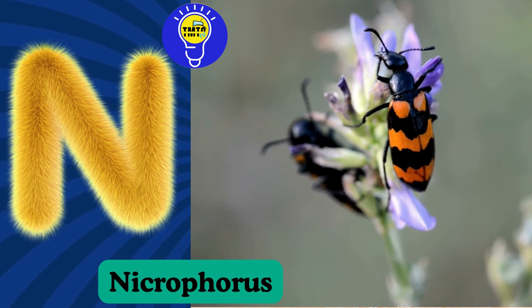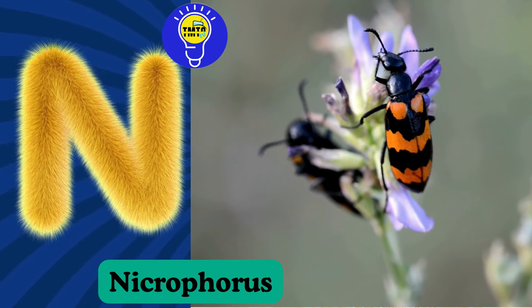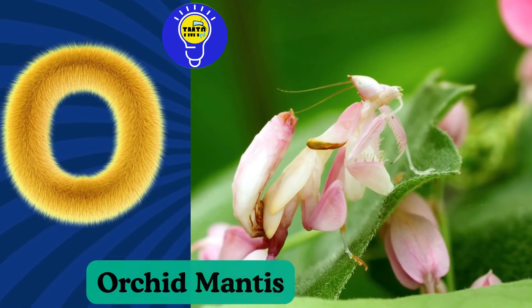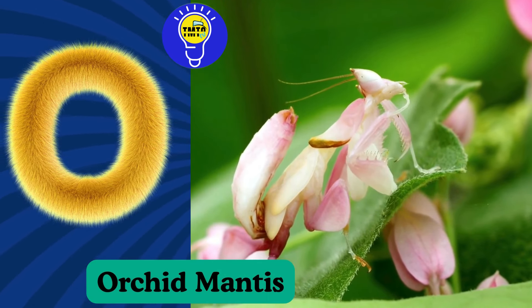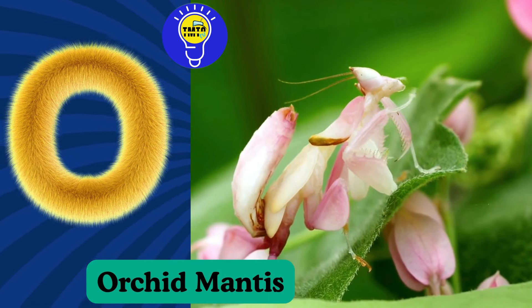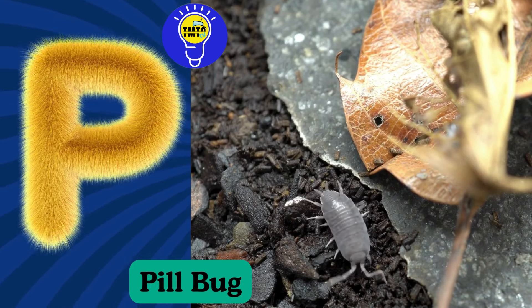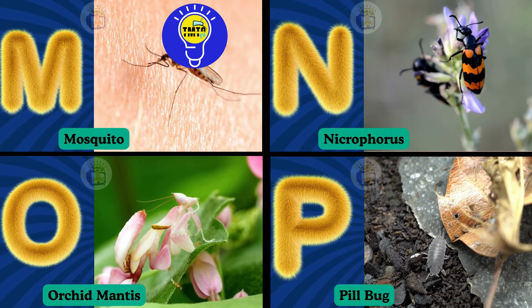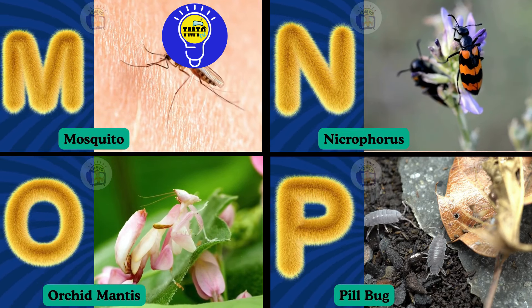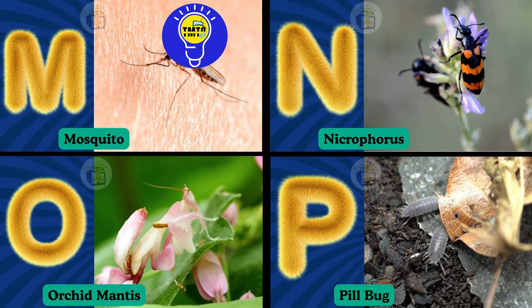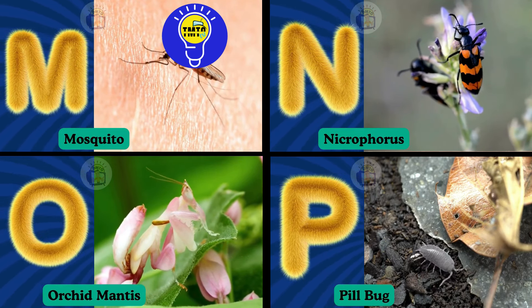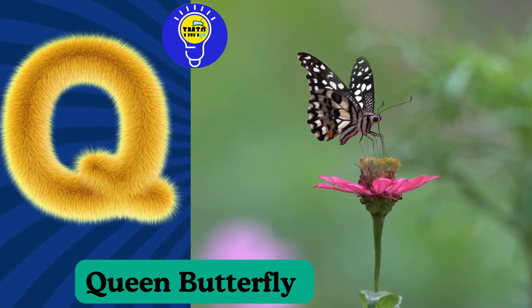M is for Mosquito. M, M. Mosquito. N is for Necrophorus. N, N. Necrophorus. O is for Orchid Mantis. O, O. Orchid Mantis. P is for Pill Bug. P, P. Pill Bug.